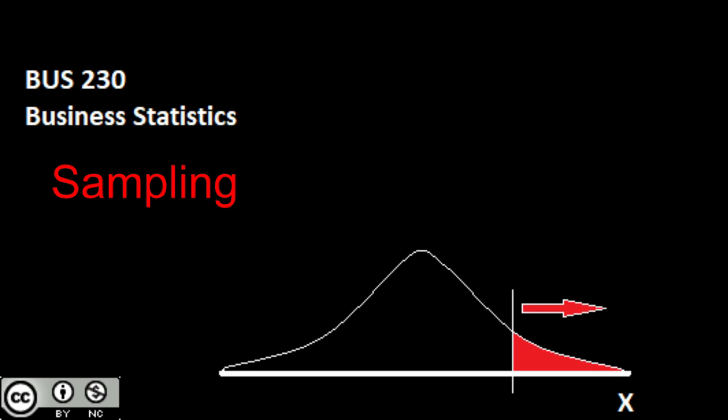From here, we'll move on to four different types of sampling. That is, if we were tasked to collect a sample, what are four different valid methods we could engage in to collect a random sample? And that's the big part — a random sample is what we're looking for.